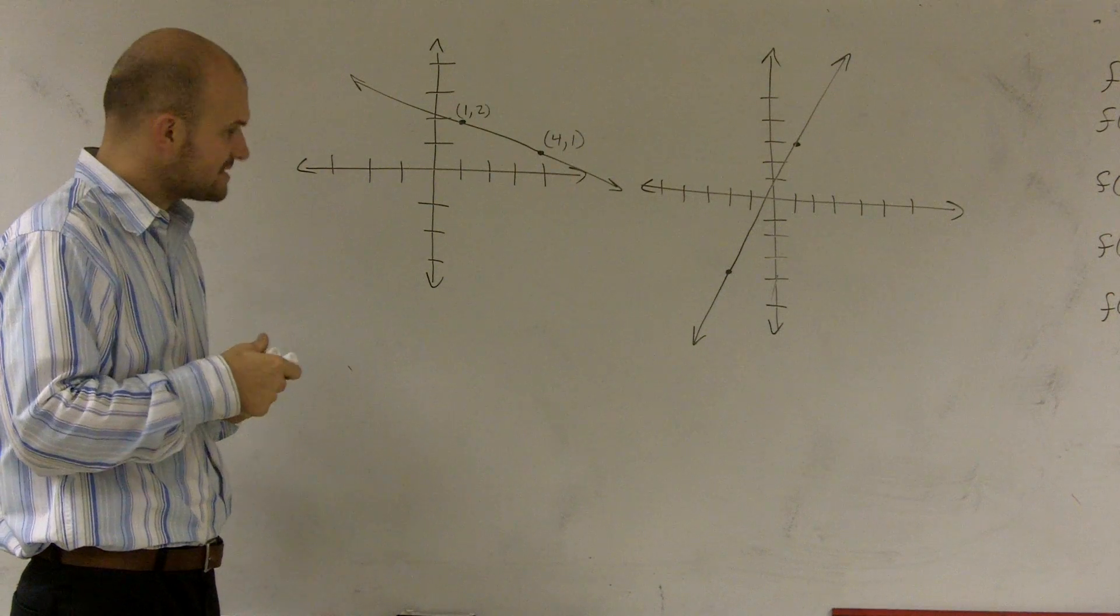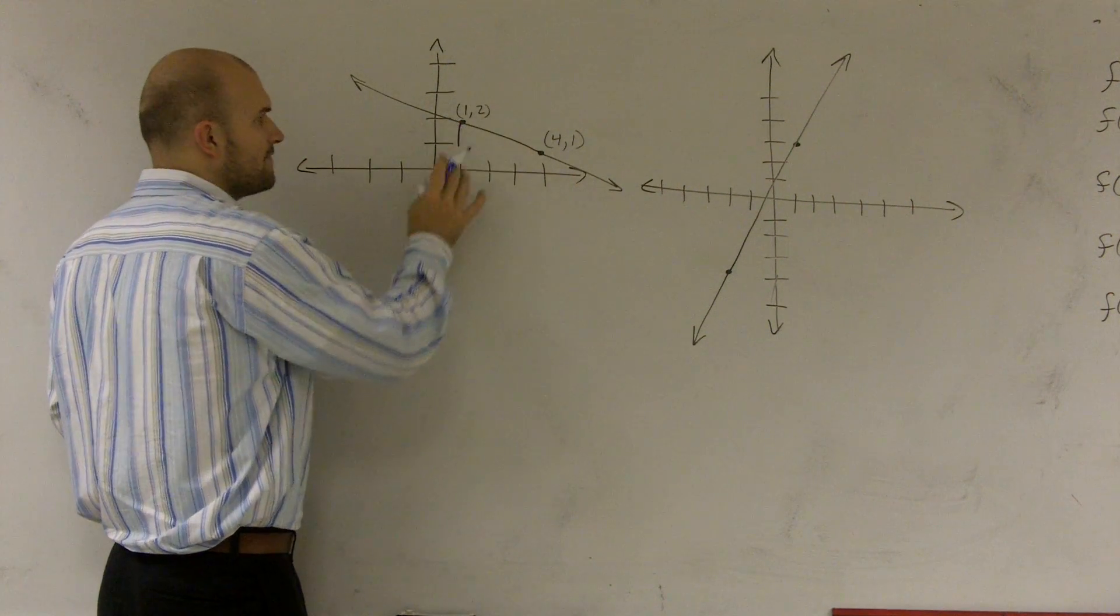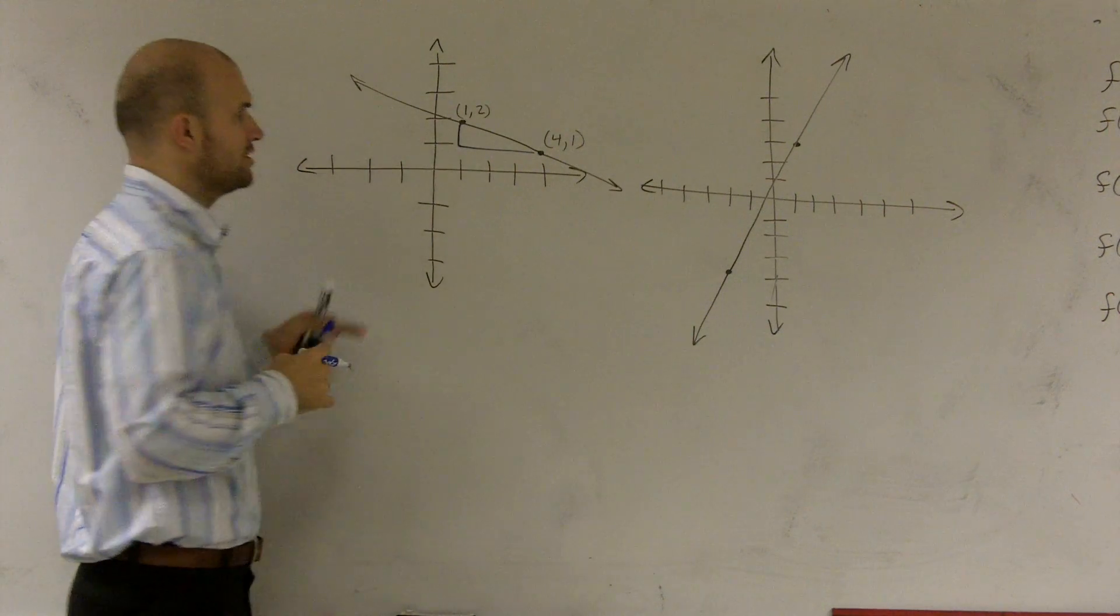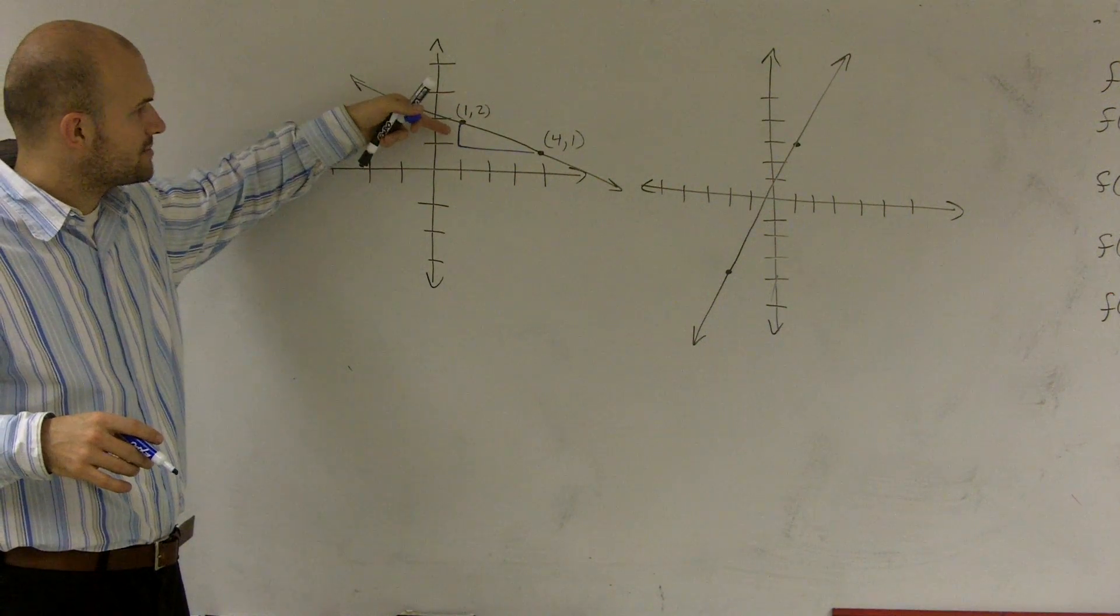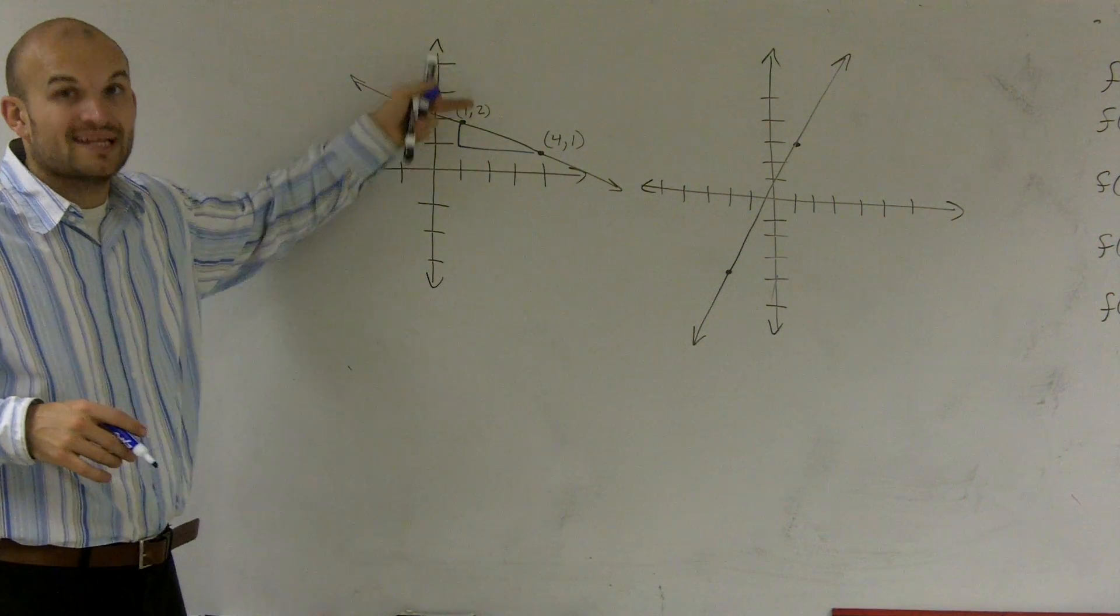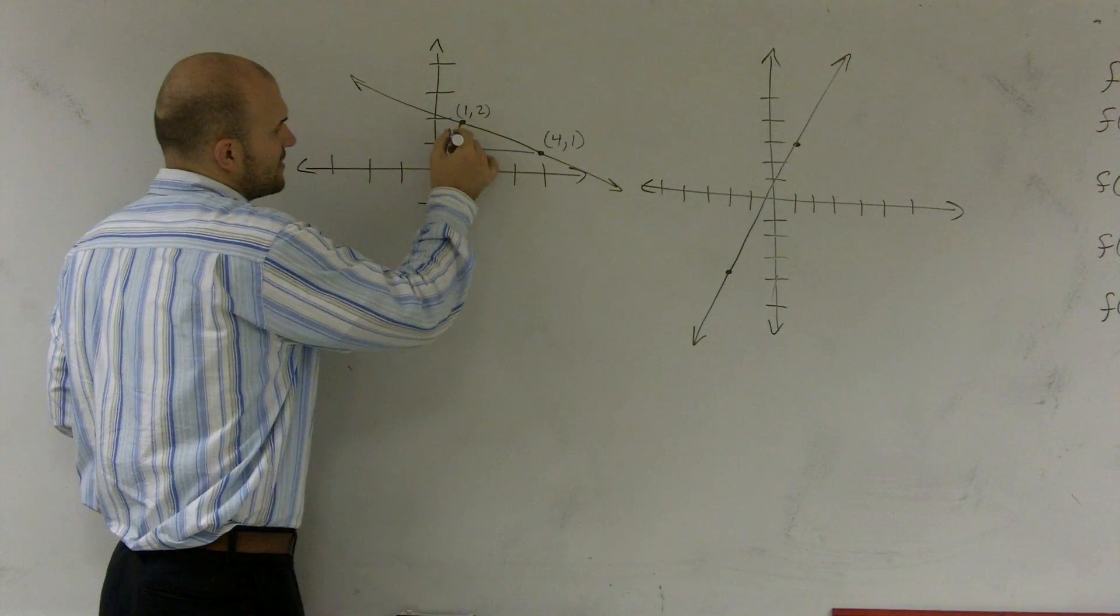Now, what I want to do is I want to see what is my change vertically. So how far am I changing from this point to this point? What am I doing vertically? Well, you can see I'm changing. I'm going down over one, up two. So from two to one, what I'm doing is I'm going down one, right?